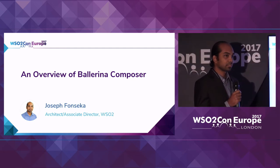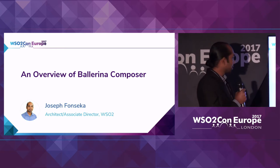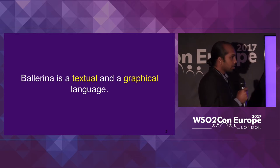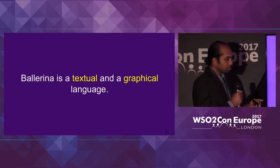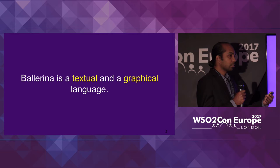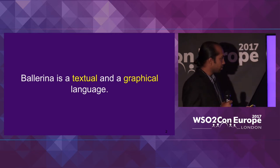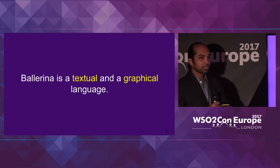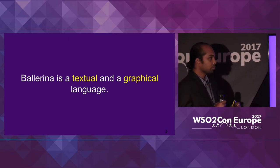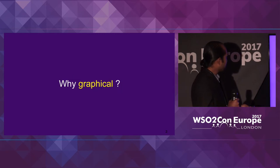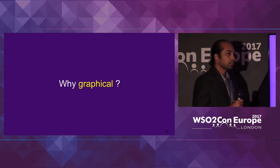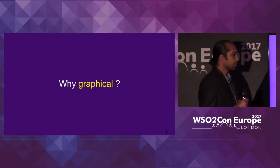So far you were taken through the textual notations and how the language is. Ballerina is both a textual and a graphical language. It's important to note that we give equal importance to how the program is represented textually — how the source code is and how easy it is to understand — and at the same time, how a program can be represented graphically. The immediate question is: why a graphical language? What are the benefits of having a graphical language?